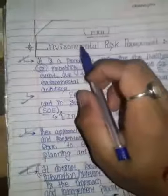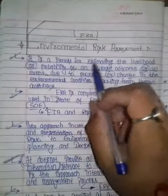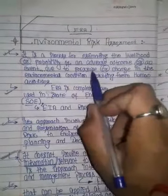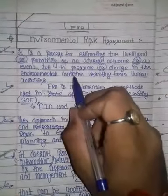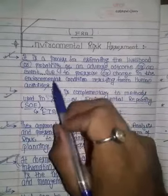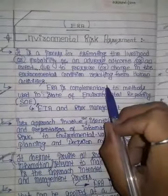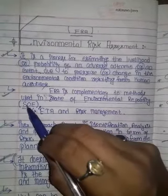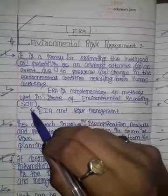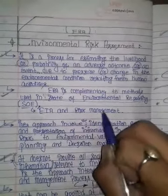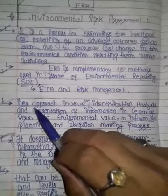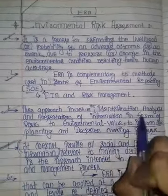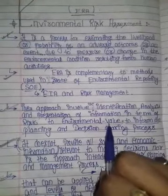We define Environmental Risk Assessment as a process for estimating the likelihood or the probability of an adverse outcome or an event due to the pressure or change in the environmental condition resulting from human activities. It uses complementary methods in State of Environmental reporting, given by EIA — Environmental Impact Assessment — and risk management. This approach involves the identification, analysis, and presentation of information in terms of risk to the environmental value.